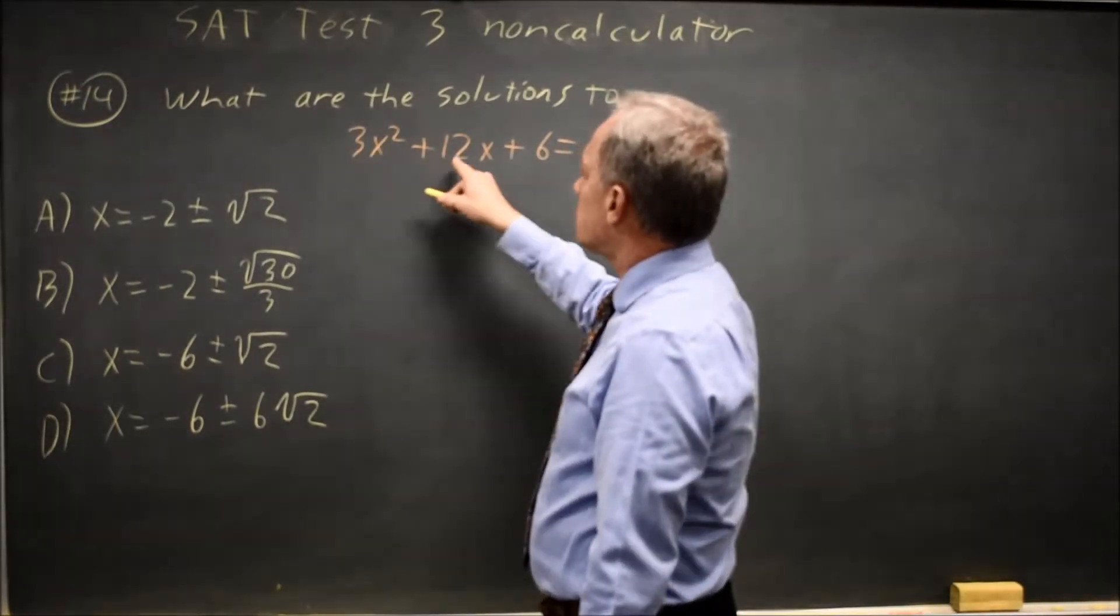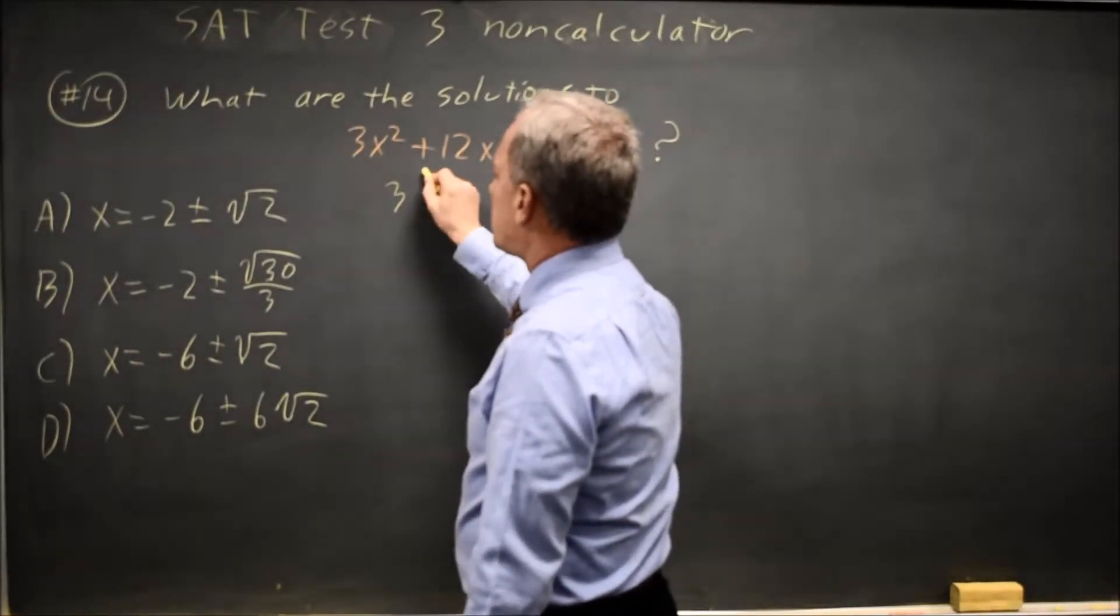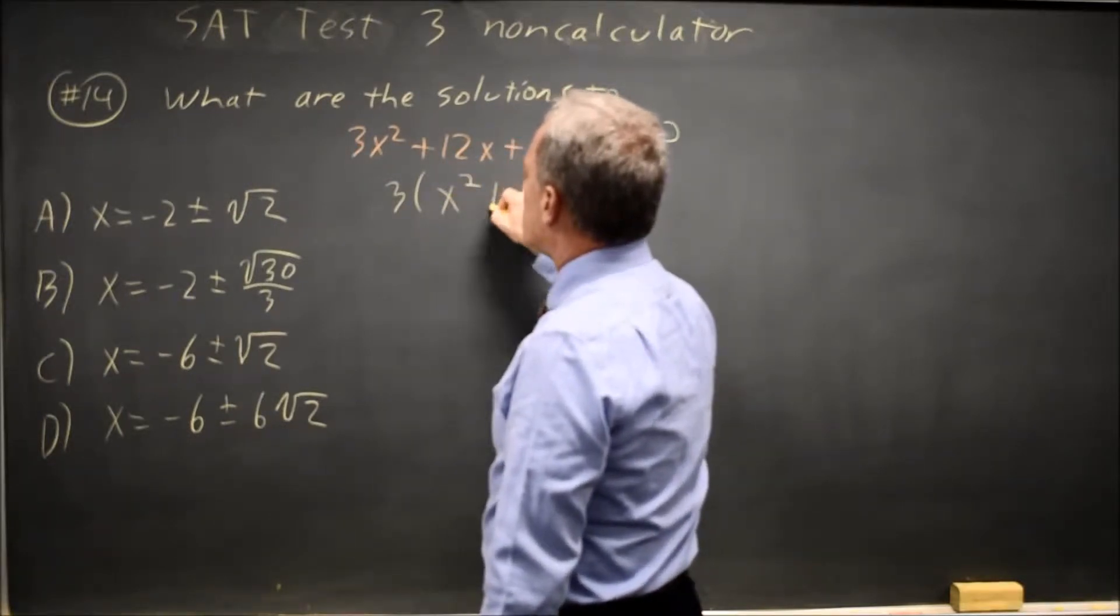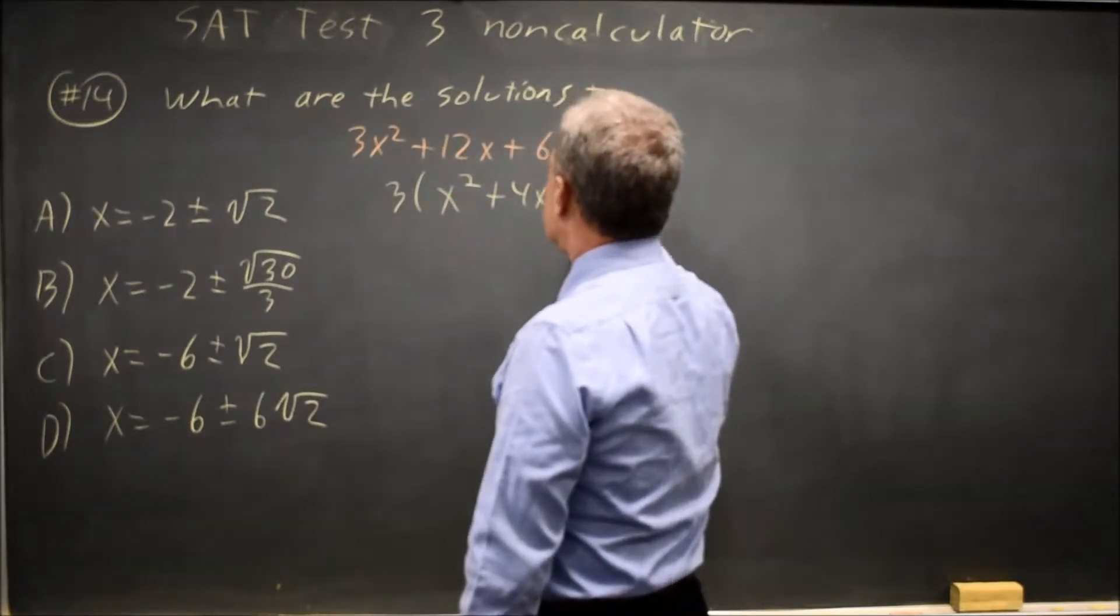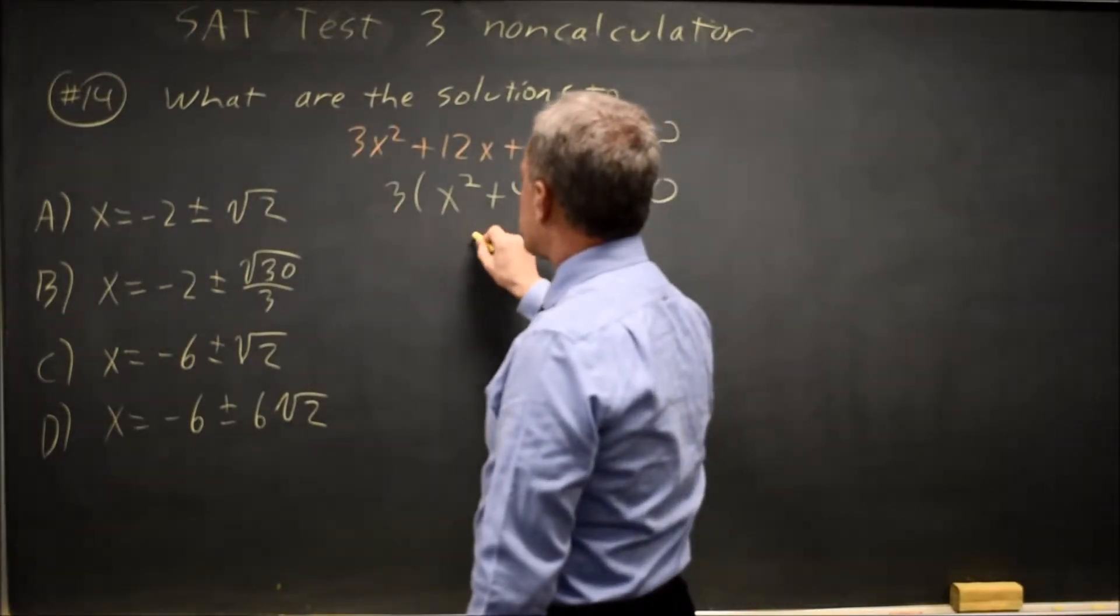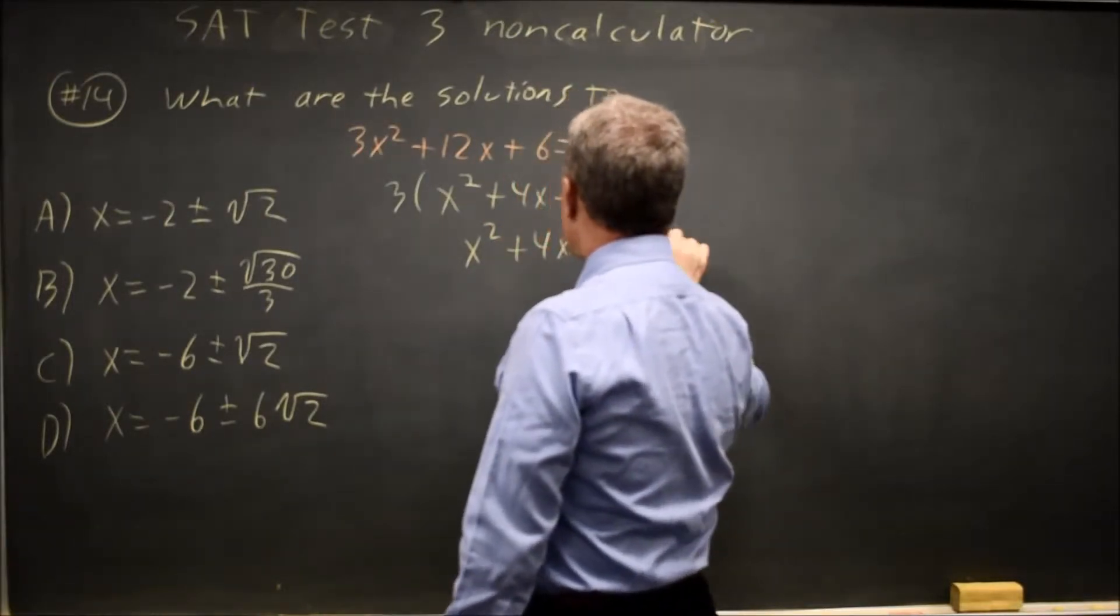But first, I notice that each term is a multiple of 3. So I can factor out a common factor of 3, leaving me with 3 times x squared plus 4x plus 2 equals 0. So since 3 is not 0, the second factor has to be 0. So just x squared plus 4x plus 2 equals 0.